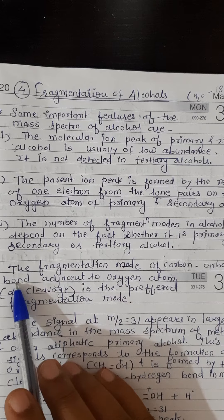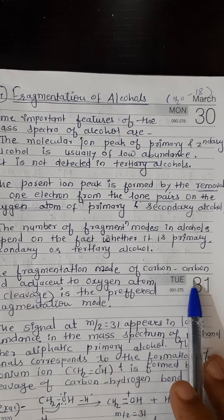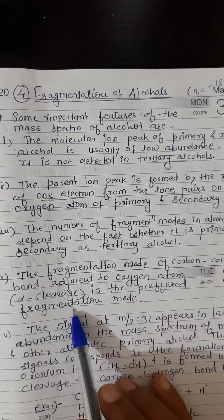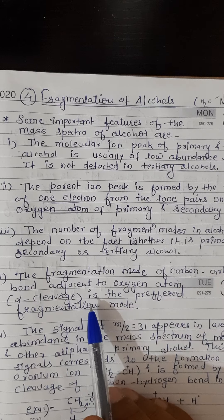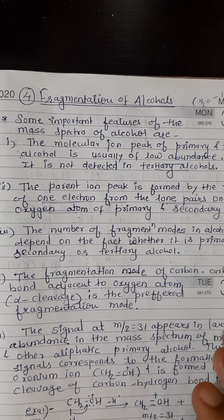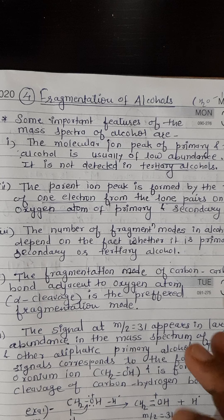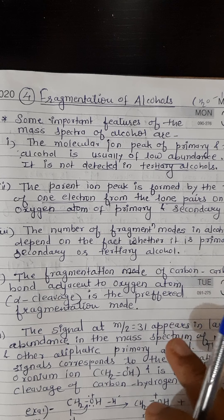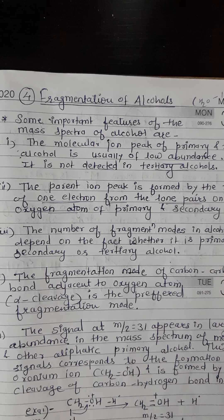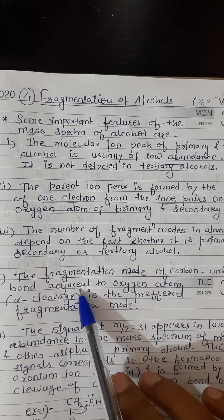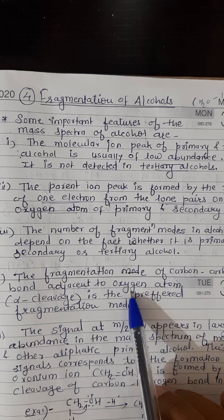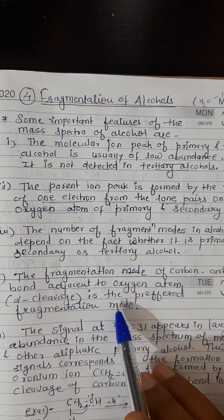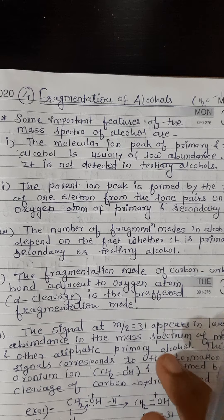The next point is that the fragmentation of the carbon-carbon bond adjacent to the oxygen atom — alpha cleavage — is the preferred fragmentation mode. This means we look at the carbon-carbon bond adjacent to the oxygen atom to decide the fragmentation mode for primary, secondary, and tertiary alcohols.